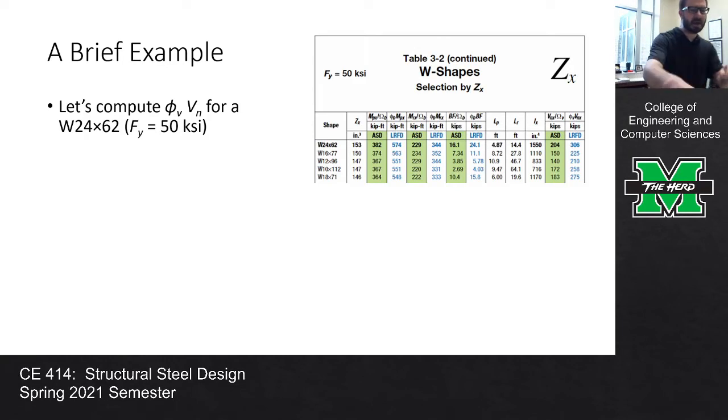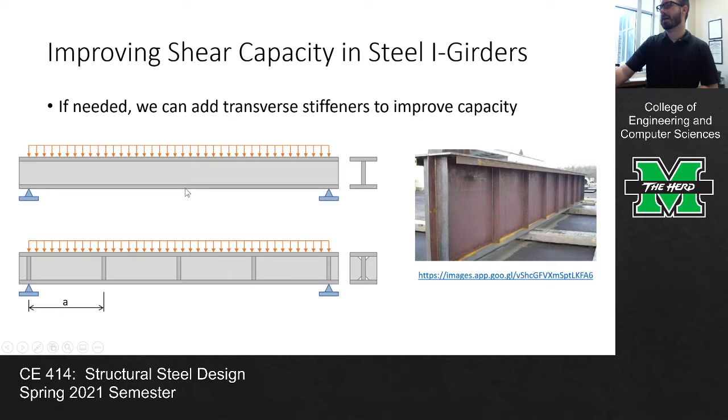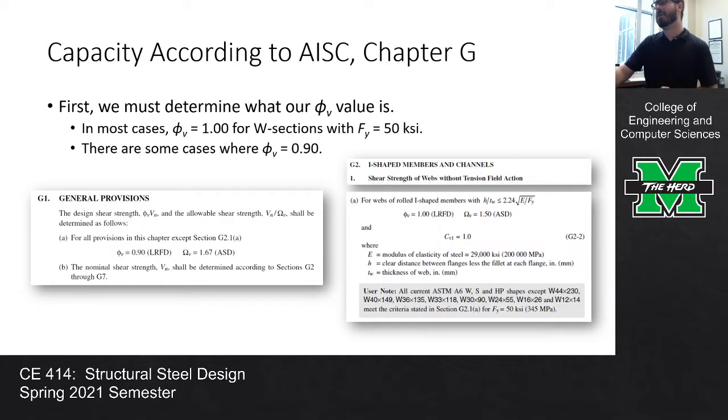All right, so to put the cherry on top of our discussion on shear, I want to go back a couple slides to talk about the capacity again and then we're gonna do this quick example and I think you'll find it's really straightforward. So whenever you're looking at the capacity according to shear, and again to be clear, the check is a little bit more involved if you're ever dealing with a situation where you need stiffened webs, where you have tension field action, or you're looking at plate girders, this can be much more involved.